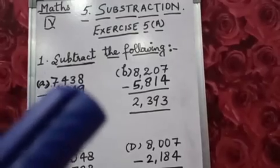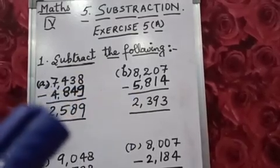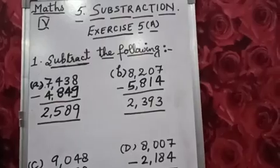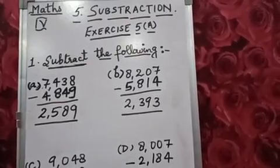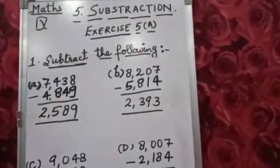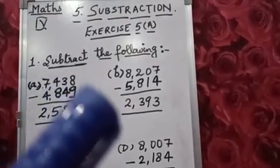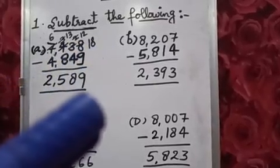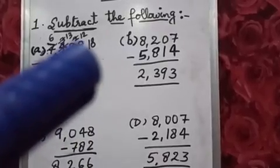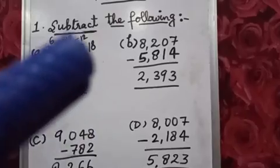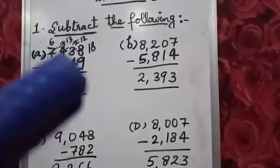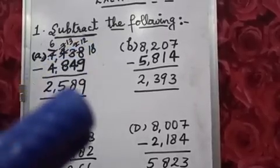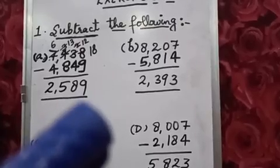Question A is 7,438 minus 4,849. First of all we will take borrow. So 8 became 18 and 18 minus 9 is 9. Now 3 will become 2. Again we will take borrow from 4, so 2 will become 12 and 12 minus 4 is 8.